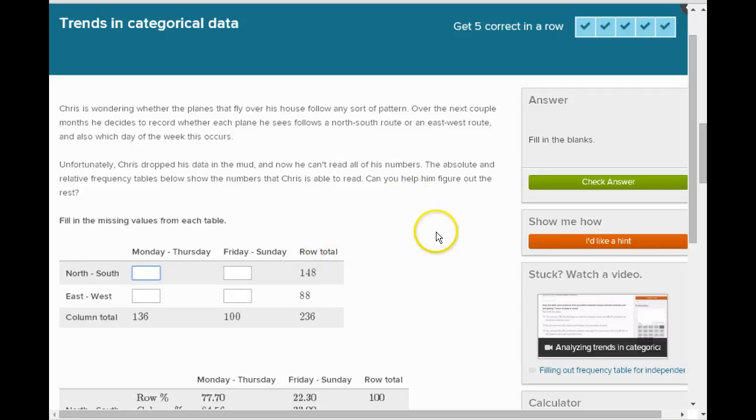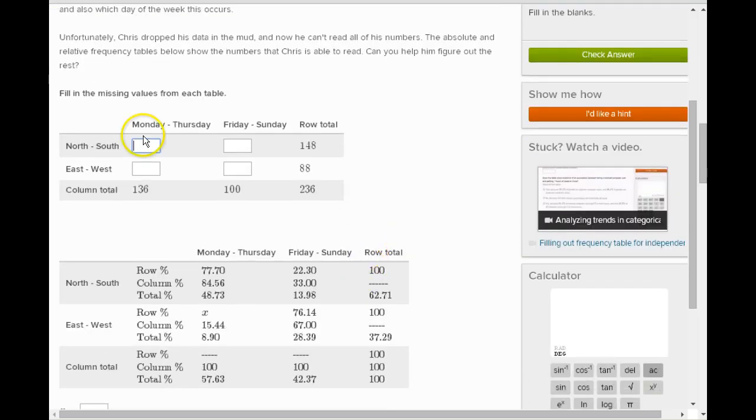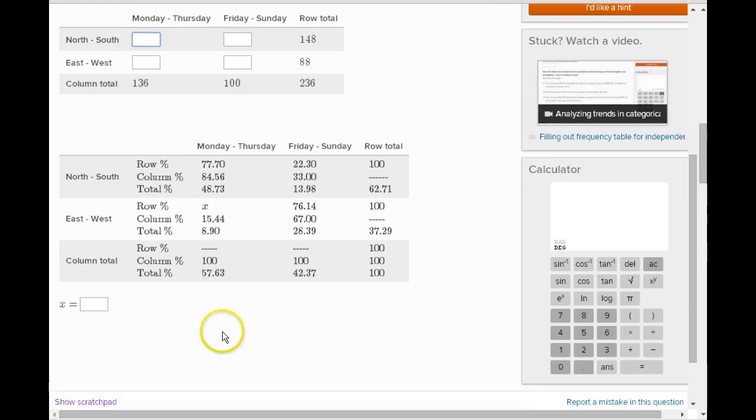Okay, we're going to try and figure out we have tables. This is a story problem. This is Khan Academy and it's called trends in categorical data. So here we have a table. Some kid collected a bunch of data and then he dropped his data and he lost some of his numbers.